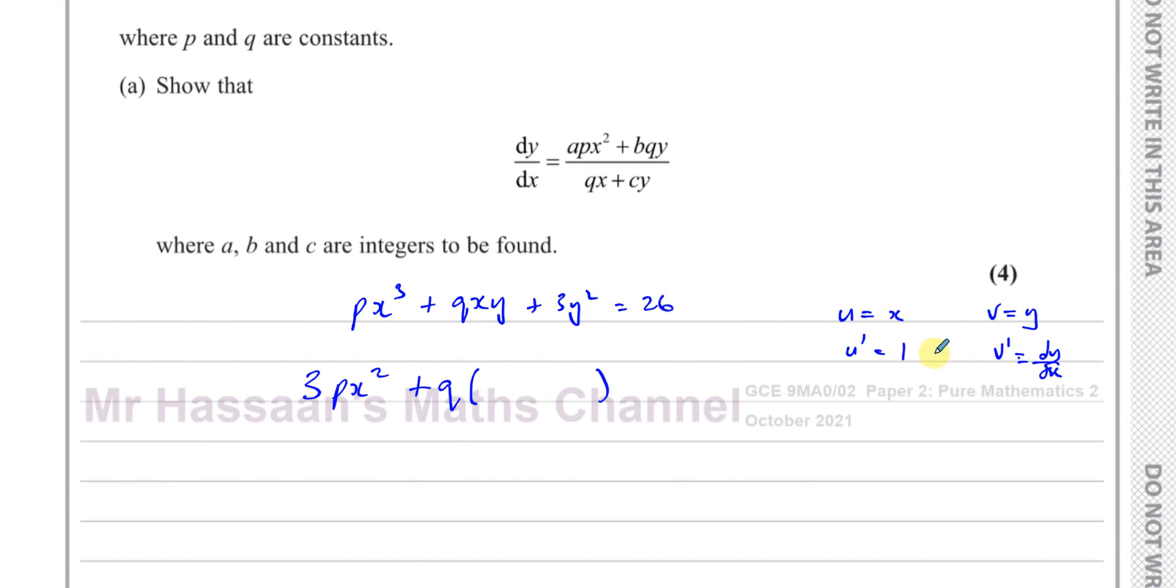So when you use the product rule, it's v times u', that's y, plus u times v', which is x times dy/dx. Don't forget the dy/dx part.